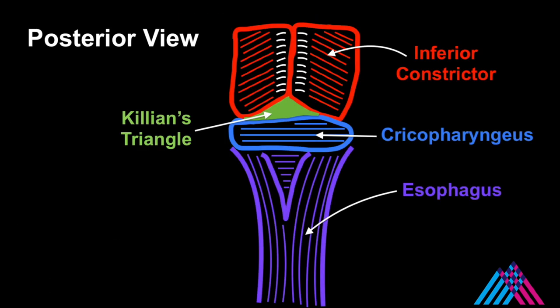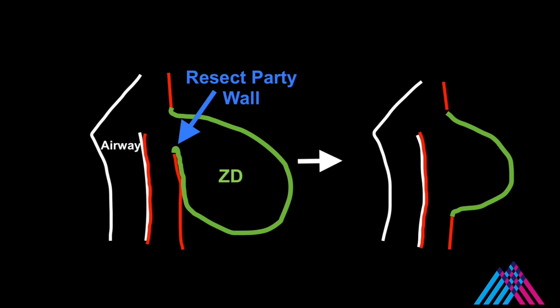This is a posterior view showing Killian's triangle. In order to create a common marsupialized space, it is necessary to resect the party wall as low as possible. When using a laser, this wall can be taken to its base, whereas with a GI stapler, a small remnant is left inferiorly due to the staggered nature of the tines.